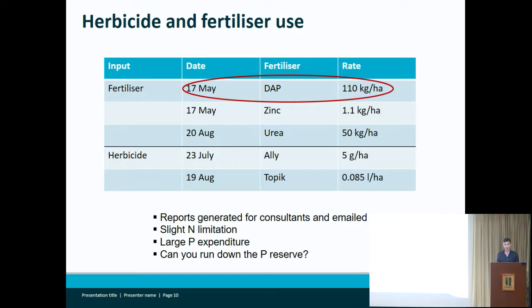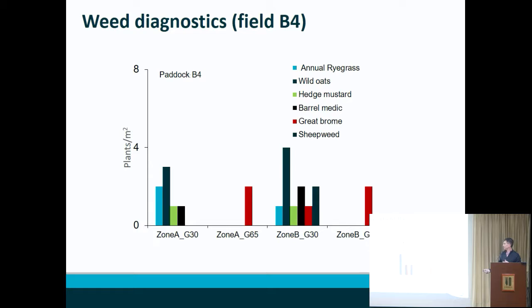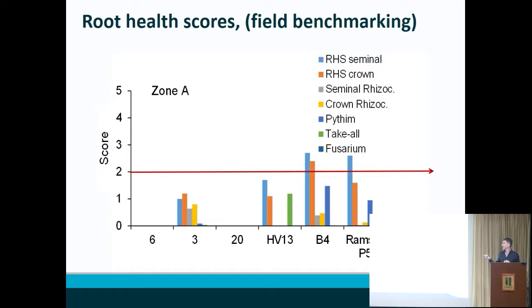We are able to track the weeds and explore the diagnostics. In this particular field, weed populations were extremely low and would not have been doing anything to the yield — they would not have been the cause of the yield gap in this instance. Root health scores: the plants are all sampled and sent to a pathology lab where trained pathologists score the roots. Anything above two suggests we are getting damage to the root system that could be leading to a yield gap of some sort.